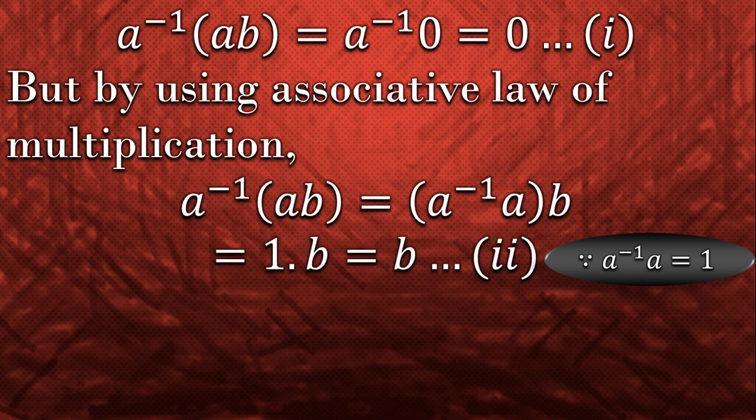So now a inverse ab is equal to b and we call it equation number 2.